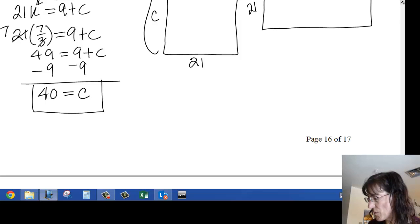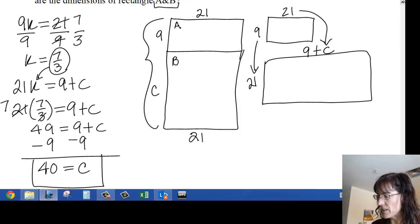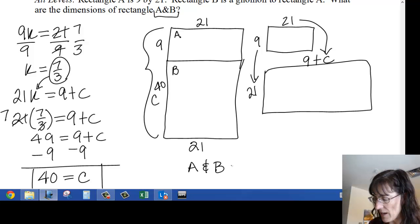Now, it was asking me more than just what is C, so let's double check. It says, what are the dimensions of rectangle A and B, which means the combination or the attachment of the two, so this entire big shape. And so if my C is 40, then my A and B is 49, because 40 plus 9, by 21.